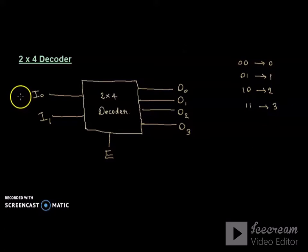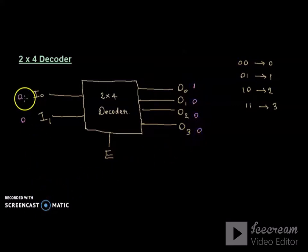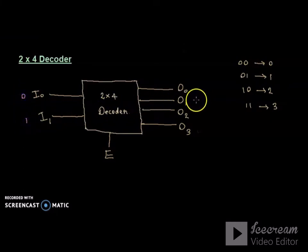Now let's use this concept. When the input is 00, output line o0 will be enabled — that means o0 is 1 and all other outputs are 0. When i0 is 0 and i1 is 1, o1 will be enabled and all other outputs are 0.